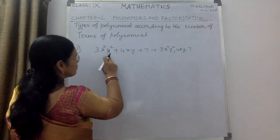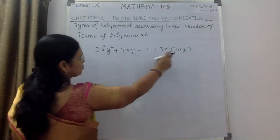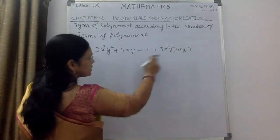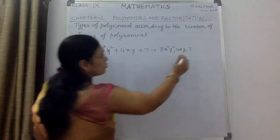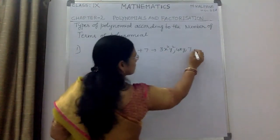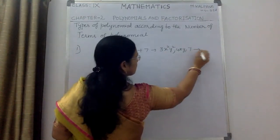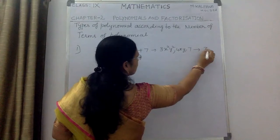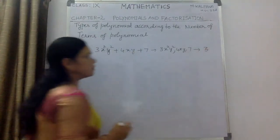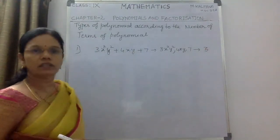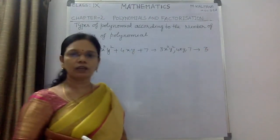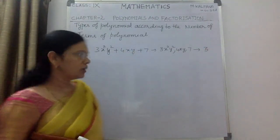The terms are 3x²y², 4xy, and 7. So how many number of terms are there, children? There are 3 number of terms in this particular polynomial.